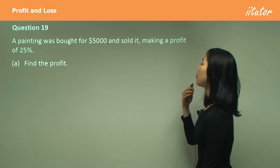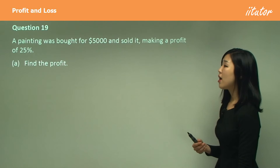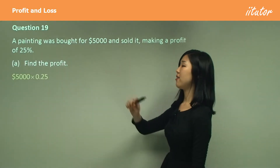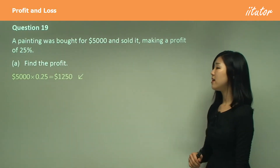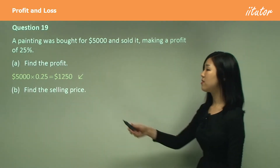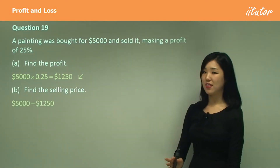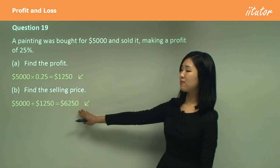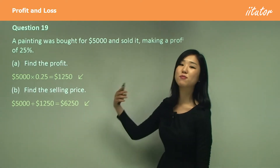A painting was bought for $5,000 and sold making a profit of 25%. The profit would be 25% of the cost price — multiply those together to get the profit amount. Now for part B, finding the selling price: since this person made a profit, this is how much extra they get on top of what they bought it for, so we add them together this time — do not subtract, we're adding. The selling price is a little more than the purchase price in order to make a profit.